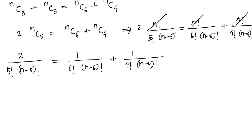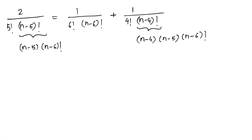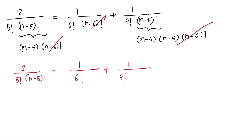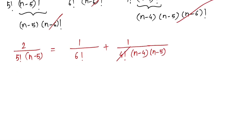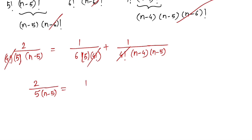This gives 2 divided by 5 factorial times (n minus 5) factorial equals 1 over 6 factorial times (n minus 6) factorial plus 1 over 4 factorial times (n minus 4) factorial. Now write (n minus 5) factorial as (n minus 5) times (n minus 6) factorial, and (n minus 4) factorial as (n minus 4) times (n minus 5) times (n minus 6) factorial. Cancel the (n minus 6) factorial throughout, then cancel 4 factorial using 5 factorial equals 5 times 4 factorial and 6 factorial equals 6 times 5 times 4 factorial. We get 2 over 5 times (n minus 5) equals 1 over 30 plus 1 over (n minus 4) times (n minus 5).